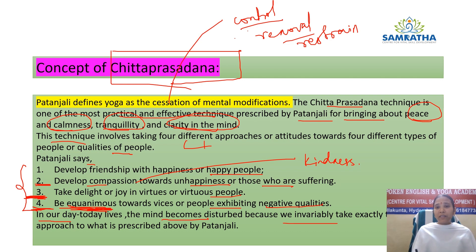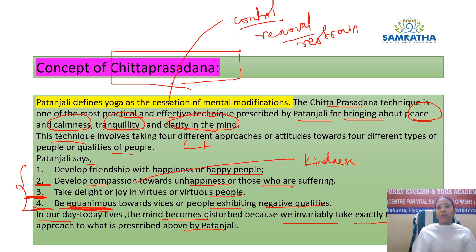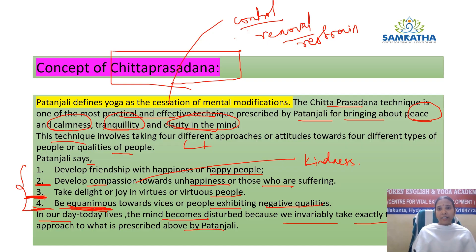In our day-to-day life, the mind becomes disturbed because we invariably take exactly the opposite approach to what is described by Patanjali. Patanjali gives four techniques: do friendship with happy people, cultivate inner happiness, show compassion towards unhappy people, appreciate good deeds and good people, and maintain peace when surrounded by negative people. But what we do is exactly the opposite.